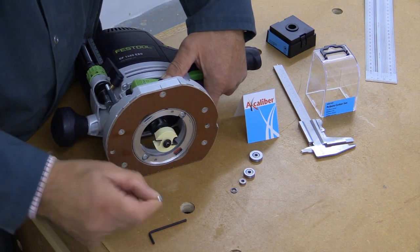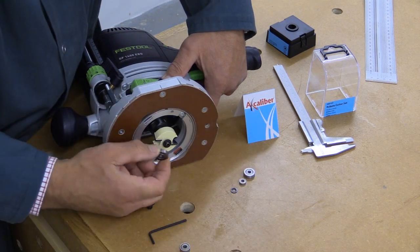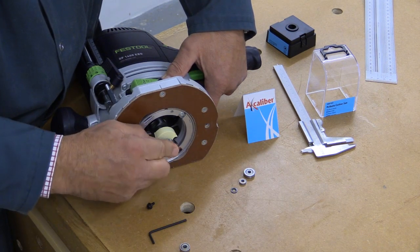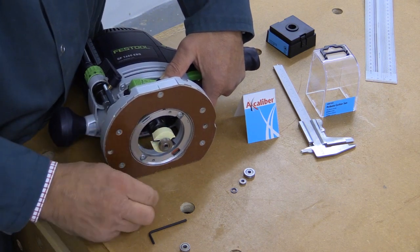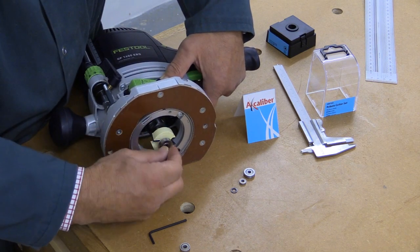So there's the bearing we've just taken off. There's a washer underneath it so I'm making sure that stays there. Put this bearing on and then on goes the screw.